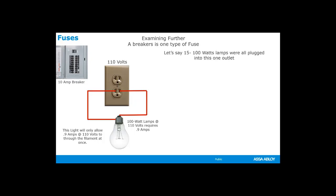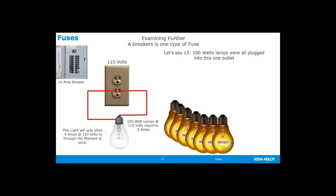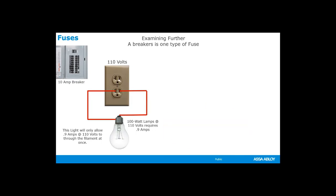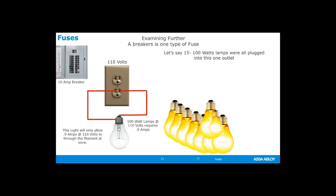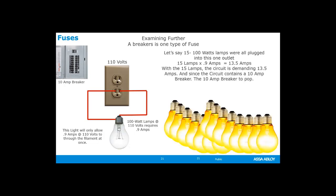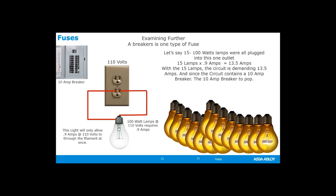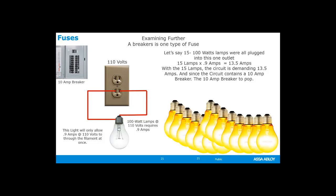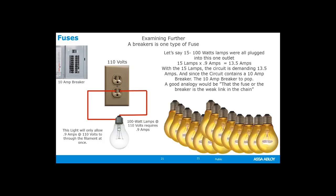So if we plug a 100-watt light bulb into this 110-volt plug, the 100-watt light bulb will require 0.9 amps of current at 110 volts. Let's say we plug 15 100-watt light bulbs into this one outlet. The 15 light bulbs will each require 0.9 amps — 15 times 0.9 is 13.5 amps of current. Remember, there's a 10-amp breaker in the circuit. With the 15 light bulbs, the circuit is demanding 13.5 amps. Since the circuit contains a 10-amp circuit breaker, the circuit breaker will pop, opening the circuit and cutting the electricity to the wall outlet.